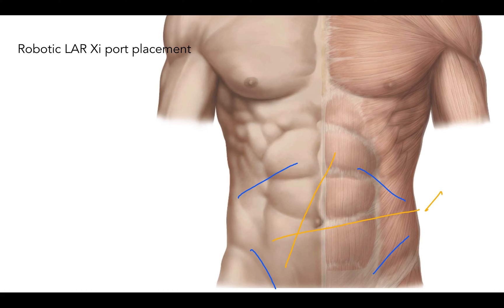I cannot overstress the utility of having two assistant ports in place to assist in cephalad retraction of the rectum and in constant suctioning of the plumes of smoke and fluid that always accumulate in the deep pelvis, especially during the posterior dissection. That sums up XI port configuration for low anterior resection with a few different modifications.